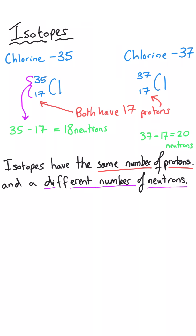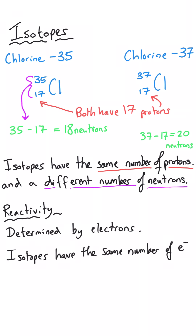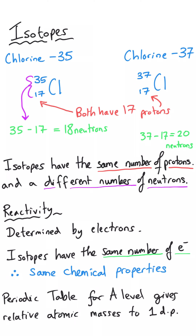Since the number of protons in an atom equals the number of electrons, these isotopes will have the same chemical properties — because it's electrons that give an atom its chemical properties. So all isotopes will behave in the same way chemically. At GCSE level, the existence of isotopes was mostly limited to chlorine or maybe copper. But at A-level, far more elements have stable isotopes, and as a result the relative atomic mass values on the A-level periodic table are given to one decimal point, which proves the existence of more than one stable isotope for those elements.